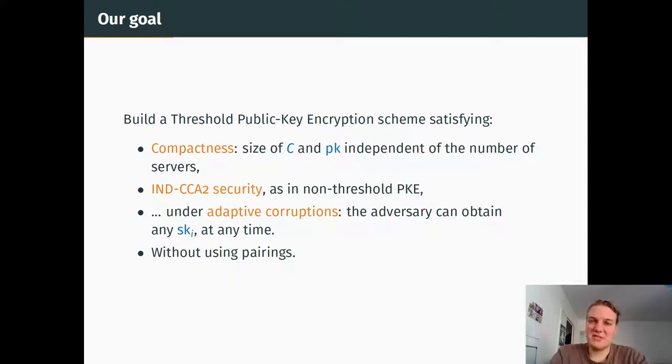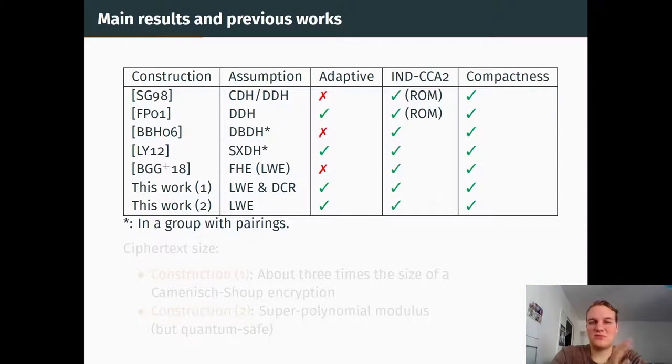Our goal was to build a threshold public key encryption scheme which satisfied four constraints. The first one is compactness: the size of the public key and ciphertext must be independent of the number of servers. The CCA2 security, which is very similar to the security in non-threshold PKE, must be satisfied under adaptive corruptions, where the adversary can obtain any SK_i at any time, and this should be done without using pairings. If we survey what was done in the previous 20 years, which is when non-interactive threshold cryptography started to emerge, we see that this was previously not achieved, except maybe for the construction from Libert and Yung, which achieved CCA2 security under adaptive corruptions and also has compactness, but it uses pairings, which is something we would like to avoid.